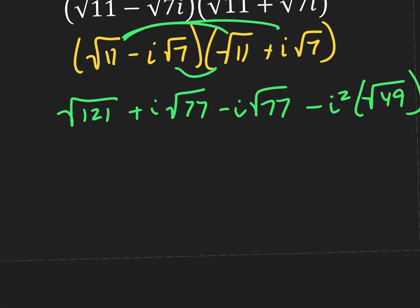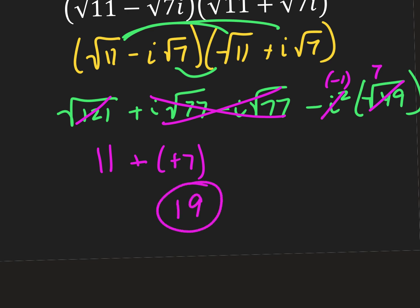Some of you are saying, can I just go ahead and simplify that? Yes, of course you can. I'm just writing every step out so you guys can see. So now I see that the square root of 121 is 11. My positive and negative i root 77s will cancel. I have minus i squared is negative 1, and the square root of 49 is 7. So minus a negative 7 — when you have minus a negative, that becomes plus. And your answer here simplifies to just 19.